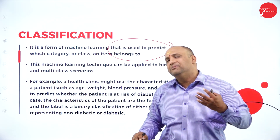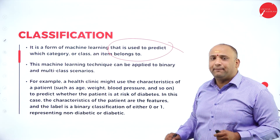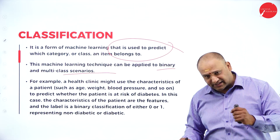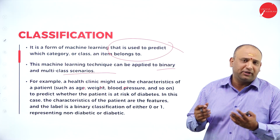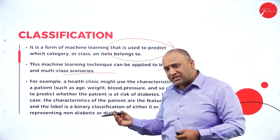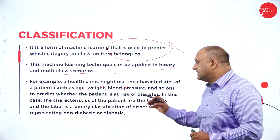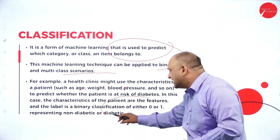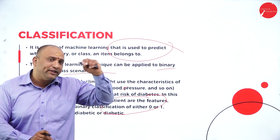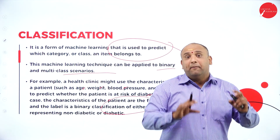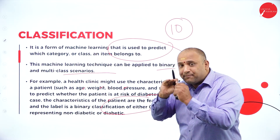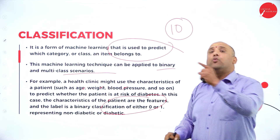Classification is a form of machine learning used to predict a category, class, or which item something belongs to. It can be applied to binary and multi-class problems. For example, at a health clinic, patient characteristics such as age, weight, blood pressure, and sugar levels are used to conclude whether a patient is suffering from diabetes or not. The characteristics are the features, and the label is the binary classification — either zero or one — yes or no. Those parameters used to arrive at the result are the classifications.